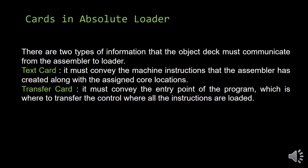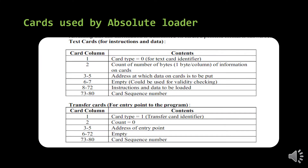All text cards and transfer cards are always in an 80-column format. What does this 80-column hold and how do you identify which card is a text card and which is a transfer card? Column number one in both cards always indicates the type of card. If zero is printed in column number one, it is a text card. If one is printed, it is a transfer card.